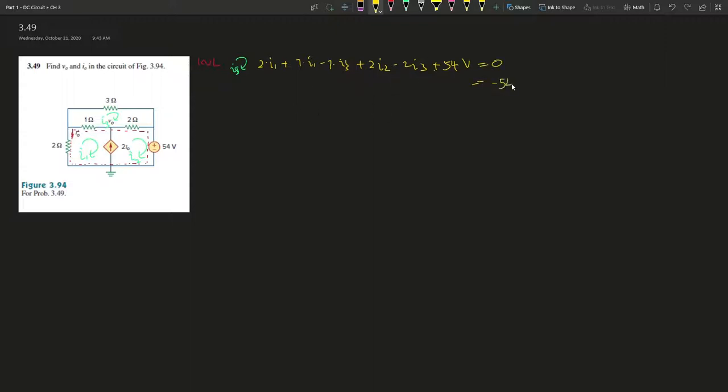So let's simplify. Negative 54 volts. And then this is I1, I1. So 3I1 plus 2I2 and then minus 1 and 2. So 3I3.